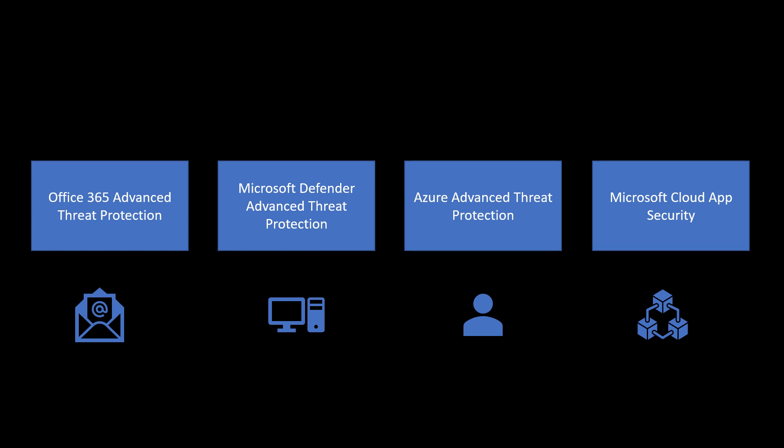Then we have the identity part, which has been protected by Azure ATP — a typical solution that can monitor the logs generated by domain controllers in terms of defining user anomalies. Lately, support for ADFS has also been introduced. The last one is Microsoft Cloud App Security, a solution that can help you protect all the applications, ensuring there is no data exfiltration, risky apps get blocked, and it also provides some DLP capabilities.